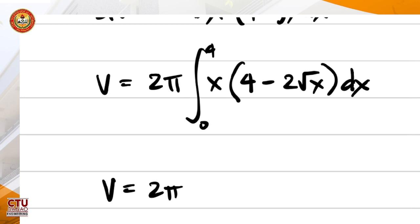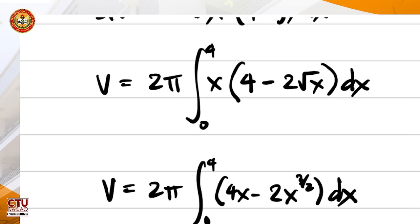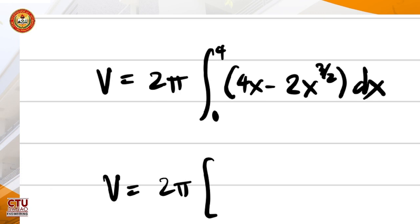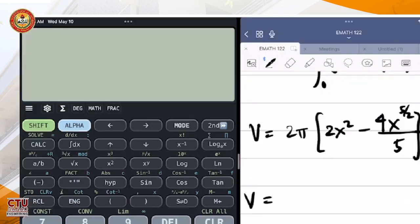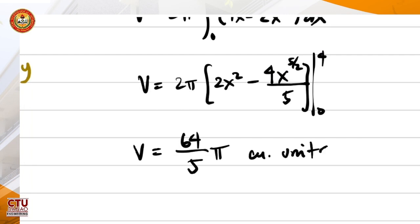So therefore, the volume is just equal to 2 pi times the integral. We could use 4x minus 2 times x raised to 3 halves dx. Then the volume is 2 pi times 2x squared minus x raised to 5 halves over 5 halves times 2 from 0 to 4. Where x is 4, the answer is still 64 pi over 5 cubic units. So either you use vertical strip or horizontal strip.